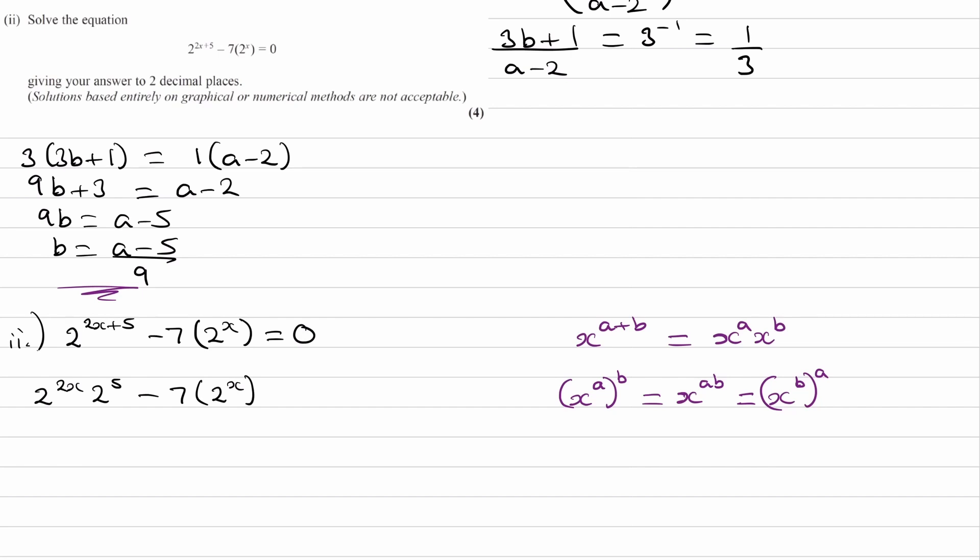So this term here, we can then rewrite as 2 to the 5 is 32, and the 2 to the power of 2x, I can write as 2 to the power of x squared, and that's just using this last rule here, minus 7 times 2 to the power of x. And if you didn't get to this step, and you think you can solve it from here, give it a go. Shouldn't be too hard from here.